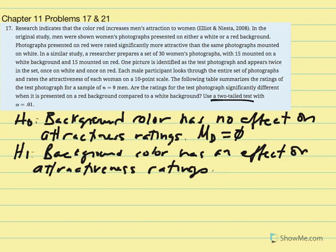The research hypothesis states that background color does have an effect on attractiveness ratings. Given the background color the picture is mounted on, that will impact how the men rate the women in terms of attractiveness. So mu d will not equal zero — we anticipate there will be a difference as a result of the difference in color. The attractiveness ratings are the dependent variable, background color is the independent variable, and we have two conditions: white and red.